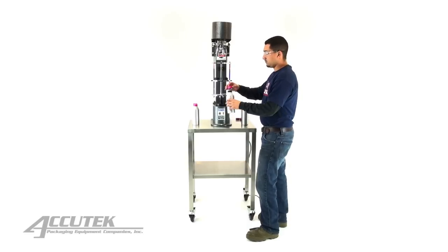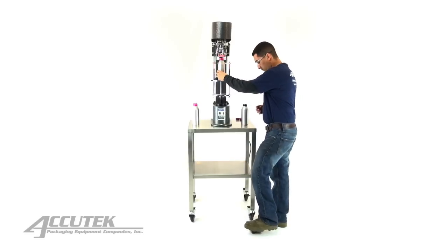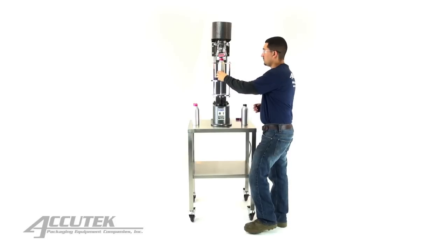The AcuCapper ROPP is a roll-on, pilfer-proof capper designed to thread and seal aluminum caps onto rigid containers.